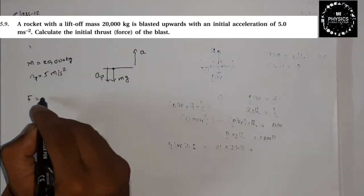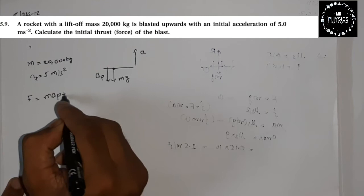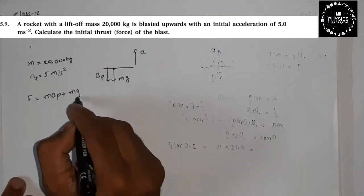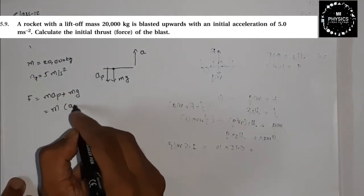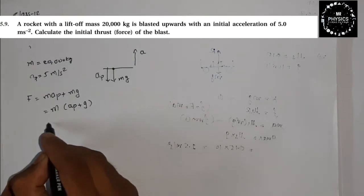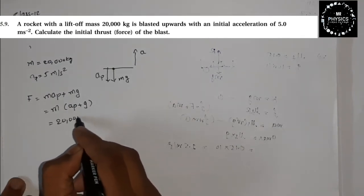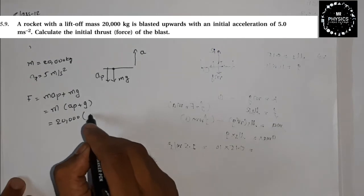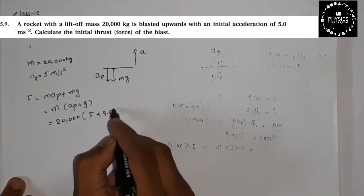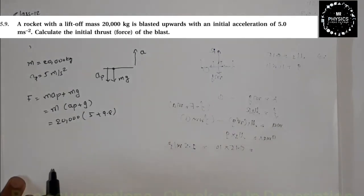So total force F is equal to what? m times a plus m times g, right? m is common, so a plus g. Simple - mass is 20,000 and 5 plus 9.8.